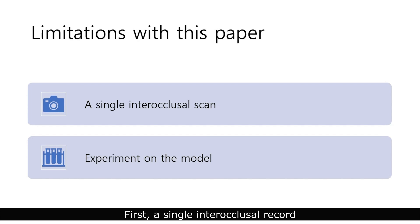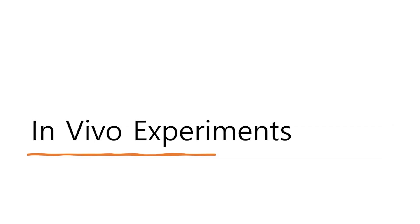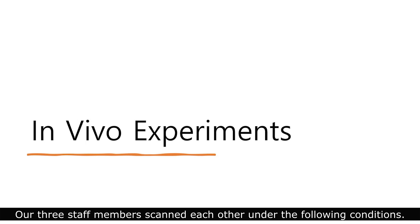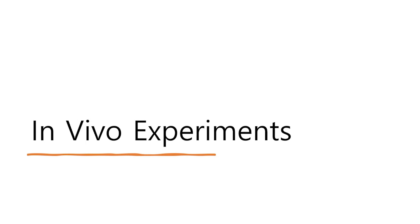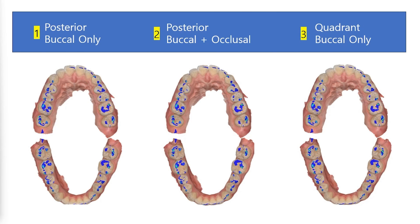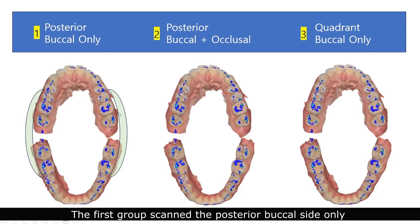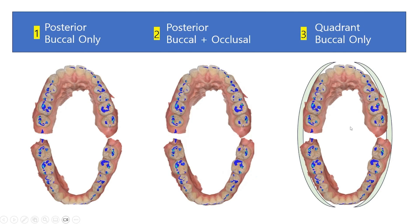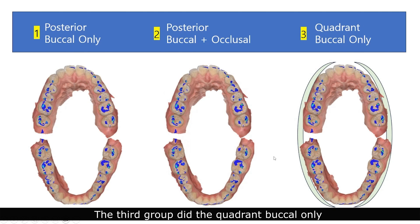But this paper has the following limitations: first, a single inter-occlusal record, and one experiment on the model. So I did some more experimentation with the MEDID intraoral scanner. Our three staff members scanned each other under the following conditions: a full-arch scan and two inter-occlusal records were performed. The first group scanned the posterior buccal side only. The second group did the posterior buccal and occlusal surfaces. The third group did the quadrant buccal only.